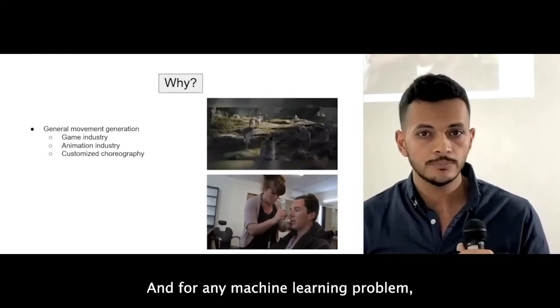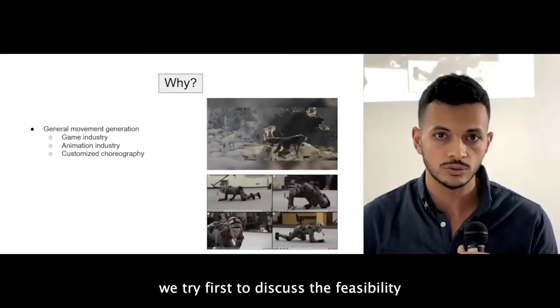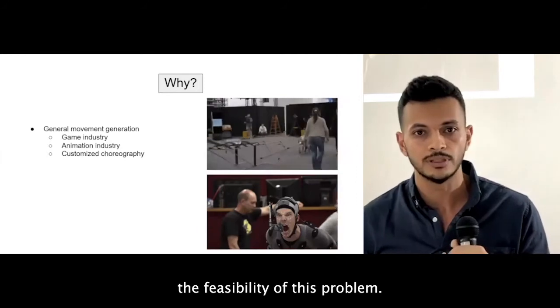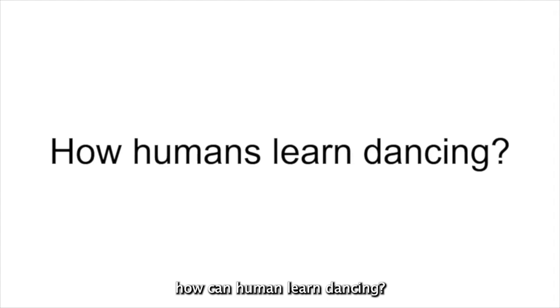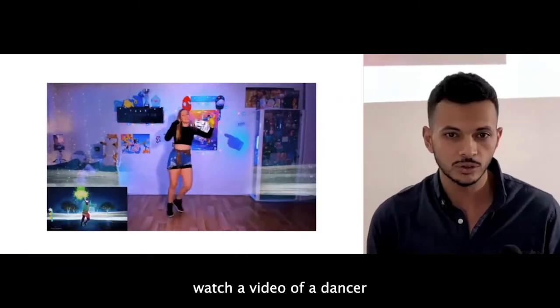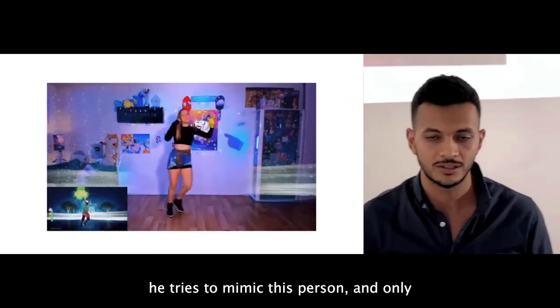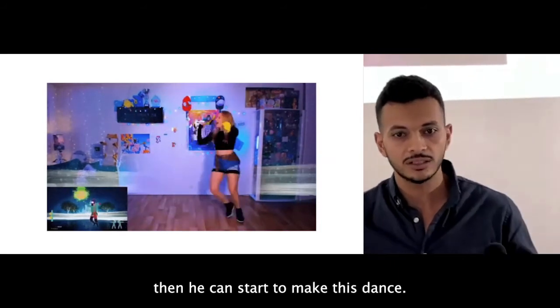And for any machine learning problem, we try first to discuss the feasibility of this problem. And to discuss the feasibility of this problem, we have to ask ourselves, how can human learn dancing? The average human, when he wants to learn a dance, what he does? He basically watches a video of a dancer or watches a dancer. And at the beginning, he tries to mimic this person. And only then, he can start to make this dance.